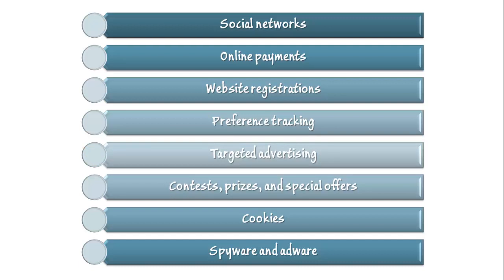Since the dawn of the Internet, malicious parties have been using prizes, contests, and other special offers for the purpose of tricking people into divulging private information. For decades, the excitement of a contest or the promise of money, discounts, prizes, or other rewards has led countless people to divulge highly sensitive information such as bank account numbers and social security numbers. Perhaps the best known and longest lived example of such activities is the infamous Nigerian bank scam, which has been clogging email inboxes since the 1980s.